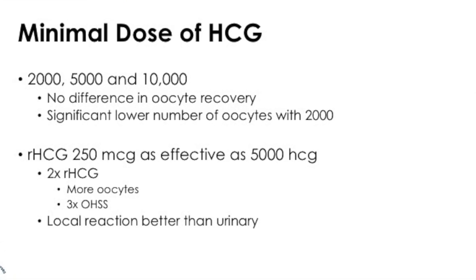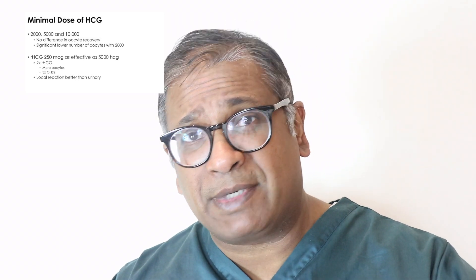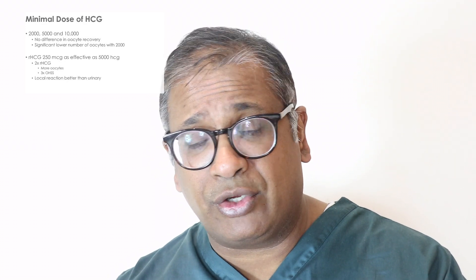What dose of HCG to give in an IVF cycle? A trial compared 2,000, 5,000, and 10,000 units — there was no difference in number of oocytes retrieved between 5,000 and 10,000, while significantly lower oocytes were retrieved with 2,000 units. We know that recombinant HCG of 250 micrograms (Ovitrelle) is as effective as urinary HCG of 5,000 units. There is also some evidence that giving 2 doses of recombinant HCG may retrieve more oocytes, but with a 3 times higher risk of ovarian hyperstimulation syndrome. Recombinant HCG also appears to have less local reaction than urinary HCG.